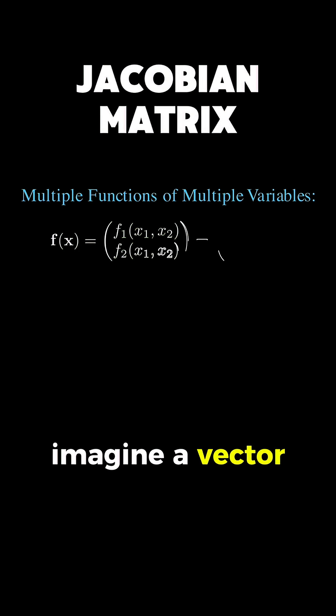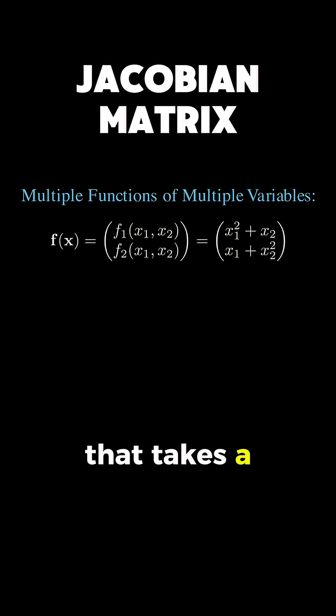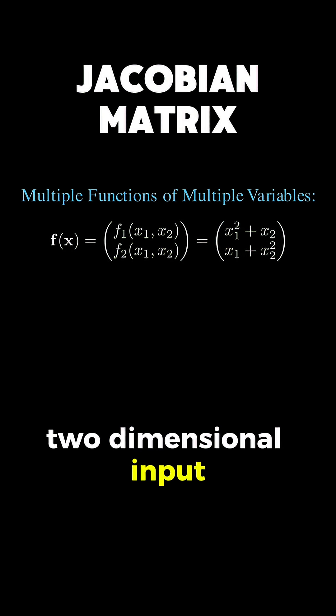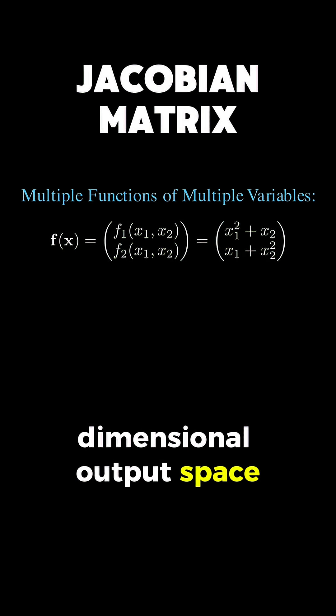Imagine a vector-valued function f that takes a vector containing x1 and x2 as input and produces a vector containing two output functions, f1 of x1 and x2, and f2 of x1 and x2. This scenario gives us a mapping from a two-dimensional input space to a two-dimensional output space.